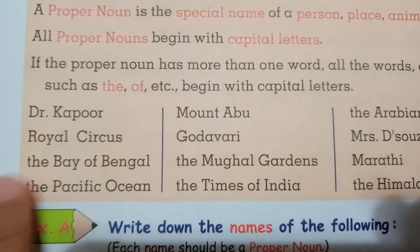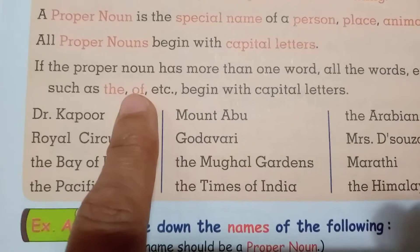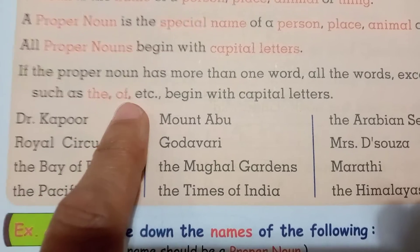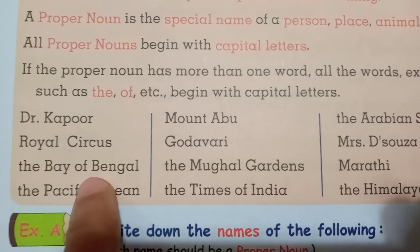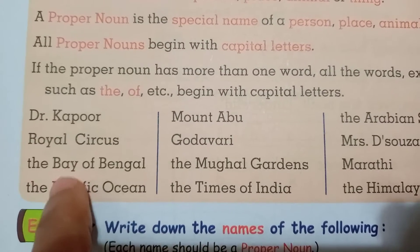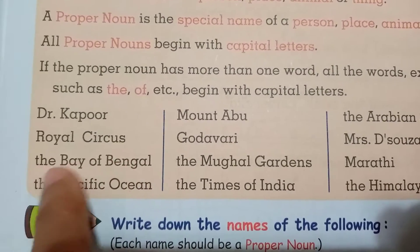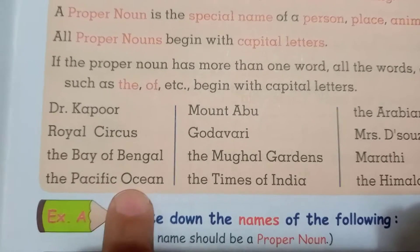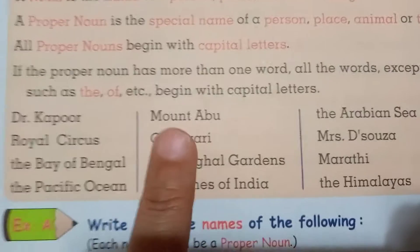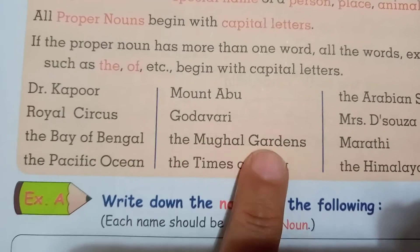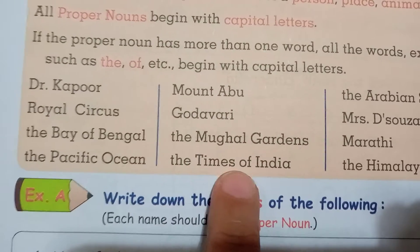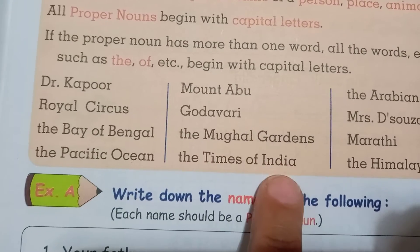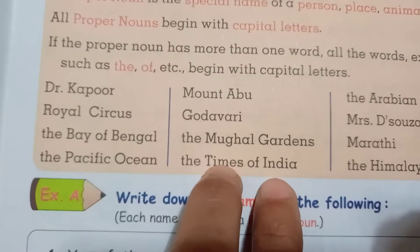For example: Dr. Kapoor, Royal Circus, The Bay of Bengal. अगर एक proper noun में दो शब्द हैं, तो उसमें 'the', 'of' — ये small letters में आएंगे। The Bay of Bengal — यहाँ 'The' capital नहीं है, small है, लेकिन Bay of Bengal का B capital है। The Pacific Ocean — P capital है, C capital है। Mount Abu, Godavari, The Mughal Gardens — M and G are capital letters. The Times of India — 'The' is small, 'of' is small, 'Times' का T capital, 'India' का I capital।